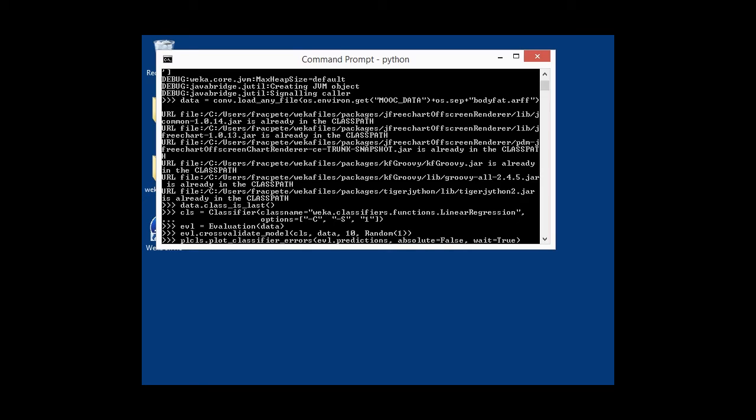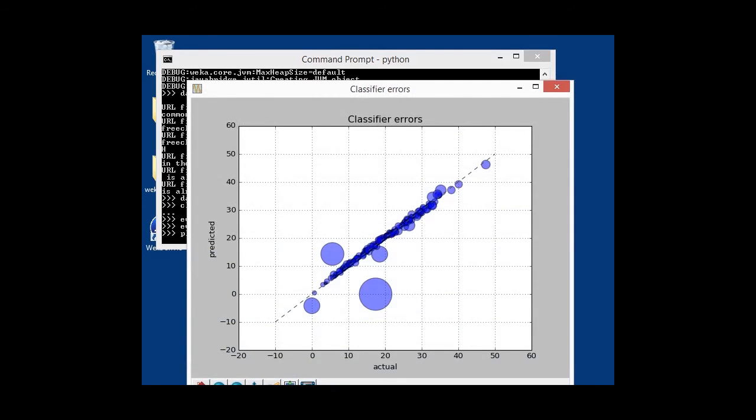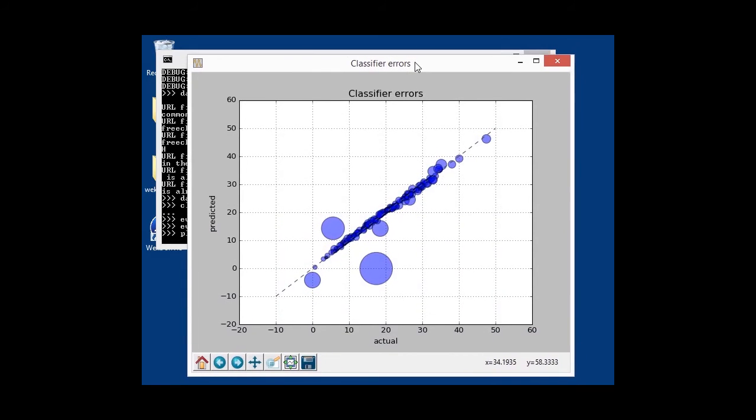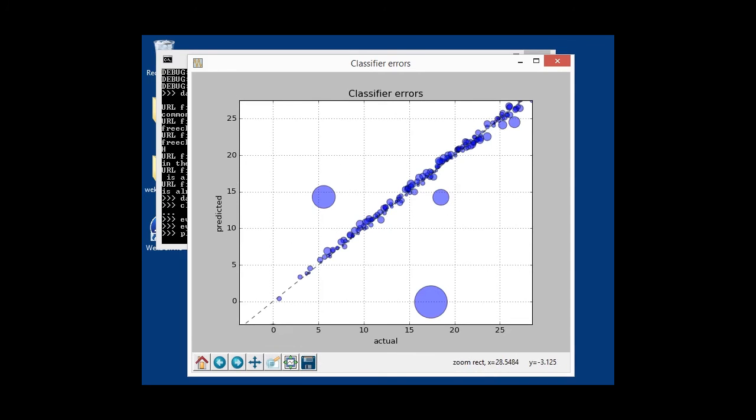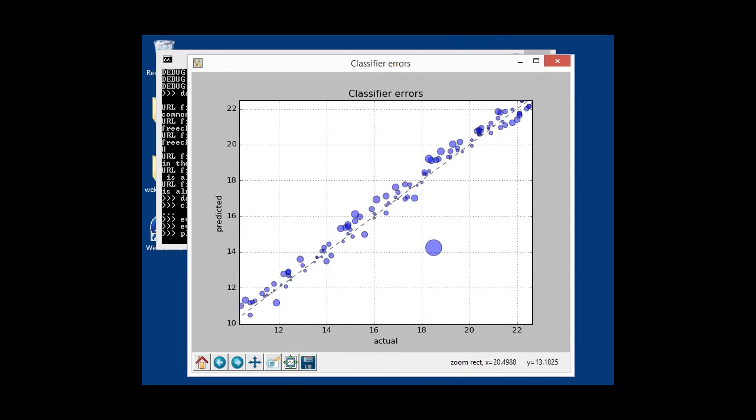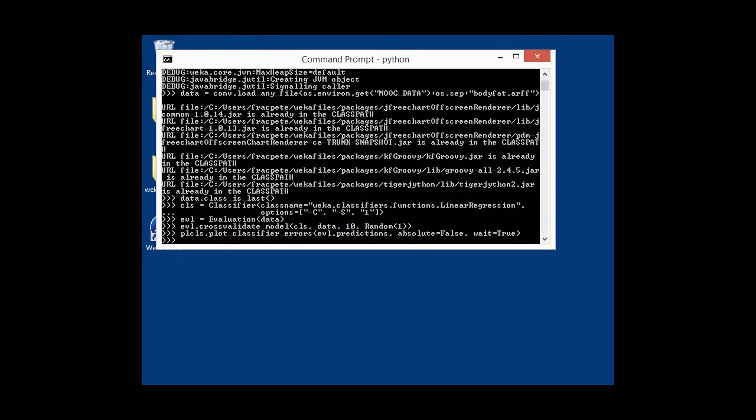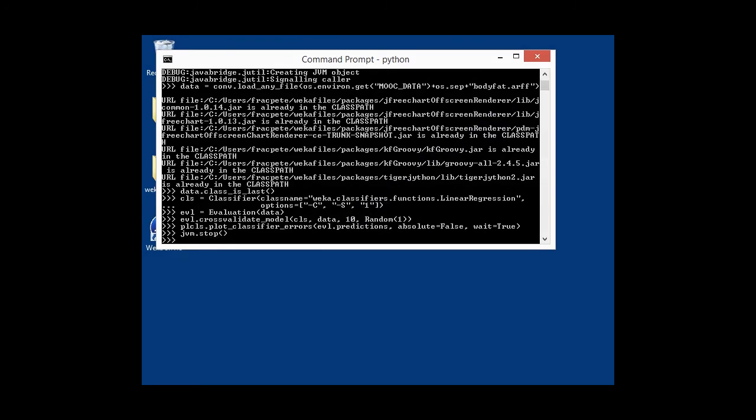And now we can plot it with a single line. Of course, we're cheating here a little bit, because the module does a lot of the heavy lifting, which we had to do with JVM manually. And here we go. Nice plot. So, of course, you can also zoom in if you wanted to. Great. And that's the final step. Stop the JVM again, and we can exit.